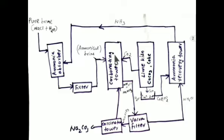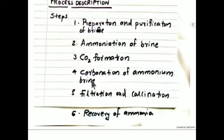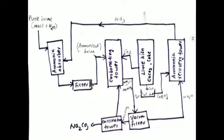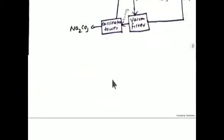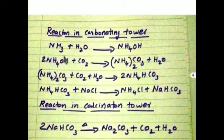The carbonating tower contains four components: water, sodium chloride, ammonia, and carbon dioxide. The fourth step — the main step in the Solvay process — is carbonation of ammonium brine, which takes place in the carbonating tower. The reactions begin with ammonia plus water giving ammonium hydroxide (NH₄OH).